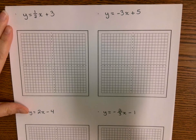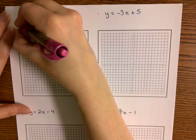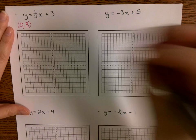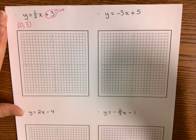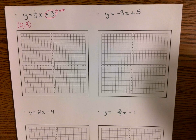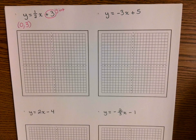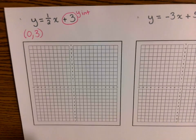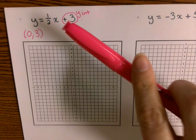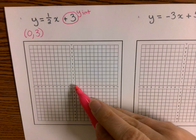The first thing we're going to plot is the point (0, 3). Remember, the y-intercept is a point — it is the point when x is equal to zero, what is the value of y? I'm going to go ahead and zoom in on this so you guys can see it easier. We plot the point (0, 3): starting at the origin, go up to the three. That's the first point on my graph.